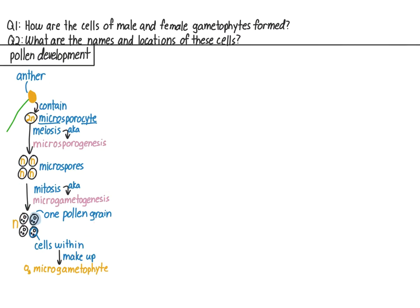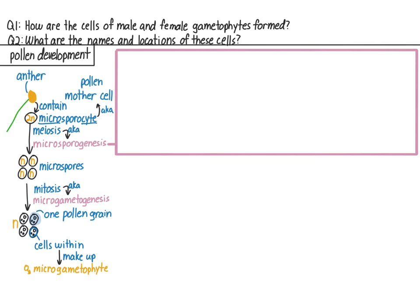Here is our diagram from last time, with a basic view of how the male gametophyte, the pollen grain, is produced. This entire process can be considered pollen development. The first part of pollen development is microsporogenesis, where the microsporocyte produces the microspores. Then we have microgametogenesis, where each microspore becomes a pollen grain. The microsporocyte is also called the pollen mother cell, since its daughter cells will ultimately become pollen grains. Let's take a closer look at microsporogenesis, or how meiosis produces the microspores.